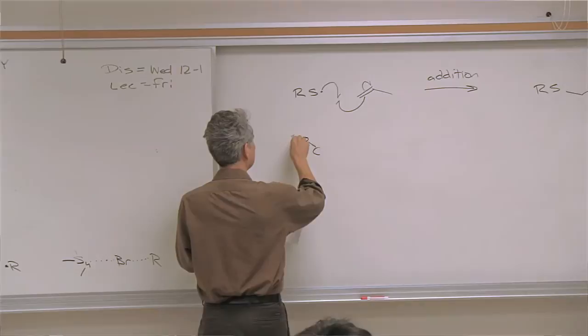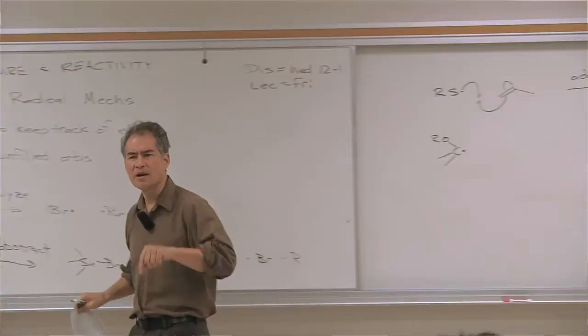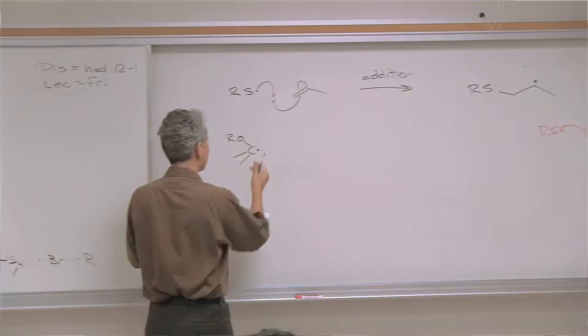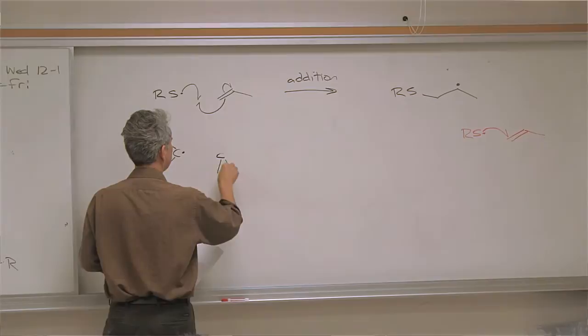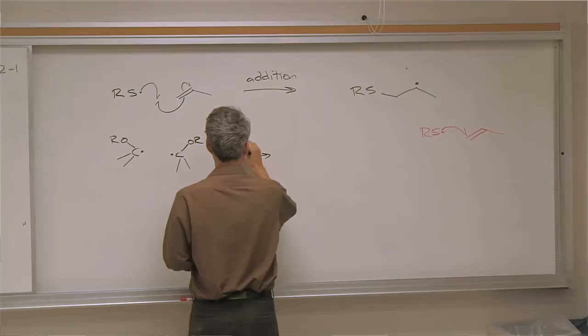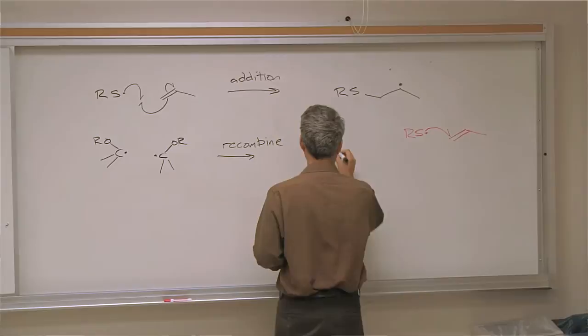Another common elementary reaction process is recombination. Here's a common type of radical stabilized by lone pairs on a heteroatom — we call this a ketyl radical, which looks like it's derived from a ketone. When you draw two of these radicals coming together, we call this recombination or say they recombine.